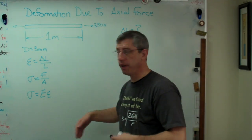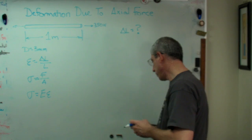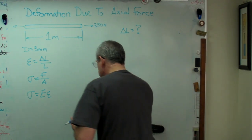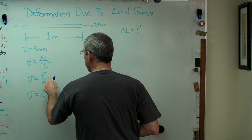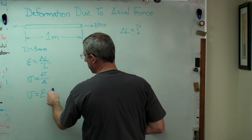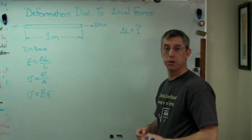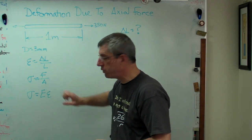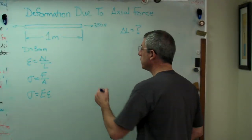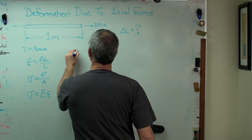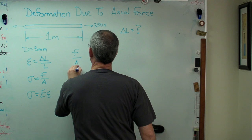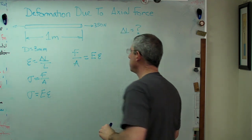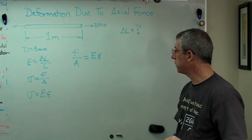So we've got these three expressions. What we're going to do is a little substitution. I can't help noticing that the right side of the Hooke's Law equation and the right side of the stress definition both equal stress. If this equals stress and this equals stress, then those two must equal each other. So let's start there: F over A equals E times strain.